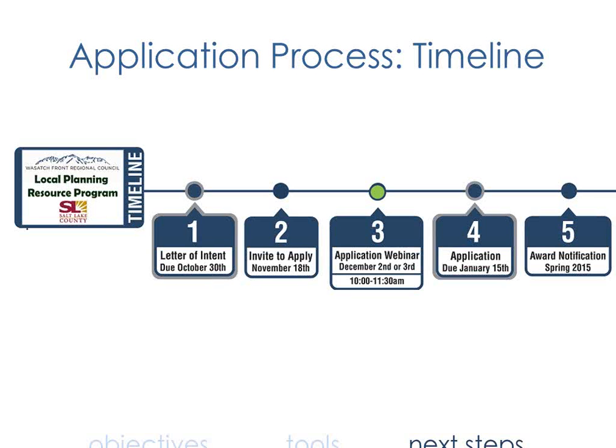That summarizes all of the resources we wanted to highlight today — this is not an exhaustive list. There are other resources available, and you're not limited to utilizing only these. The Utah Active Transportation Master Plan Design Guide is another great one if you're pursuing an active transportation master plan. The slide on screen shows the application process — we're on step three with this webinar. Val will now talk about step four and the application itself, due January 15th.